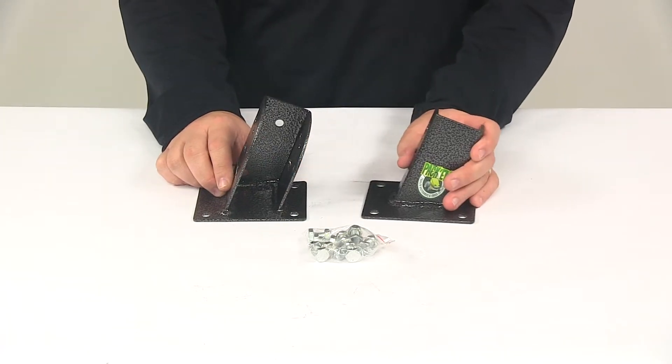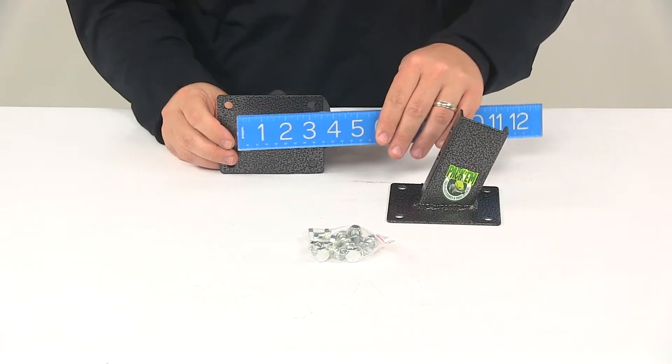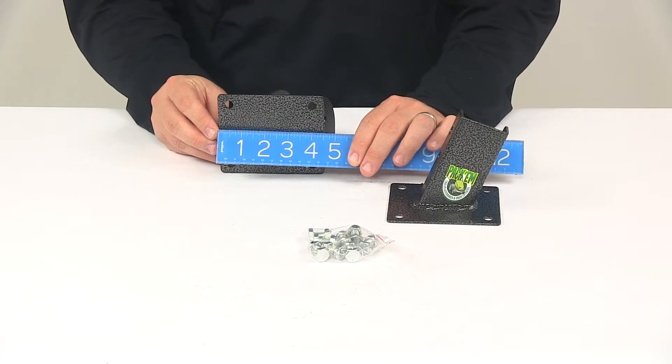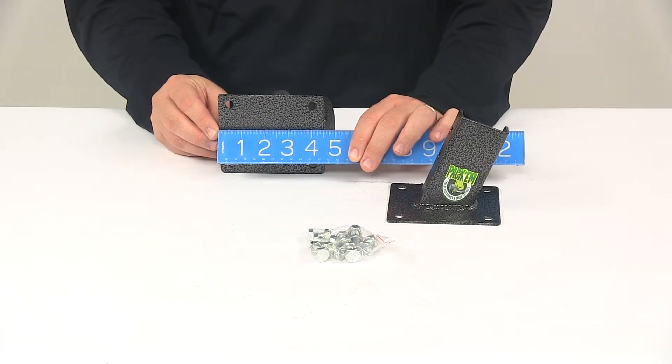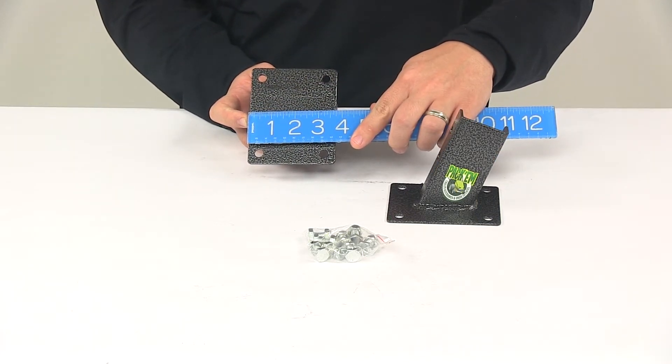Now to kind of get an idea of how much space this is going to take up at the mounting location, we can just take a measurement of the base plate. Now each base plate measures the same. You can see that that plate is going to measure four and a half inches by three and three quarters of an inch.